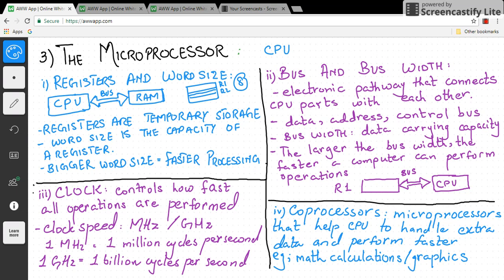The second feature is bus and bus width. Bus is an electronic pathway that connects CPU parts with each other. The CPU connects to RAM through a bus. Bus simply provides a path. There are different types: data bus, address bus, and control bus. Data bus handles data, address bus handles memory addresses, and control bus manages operations.